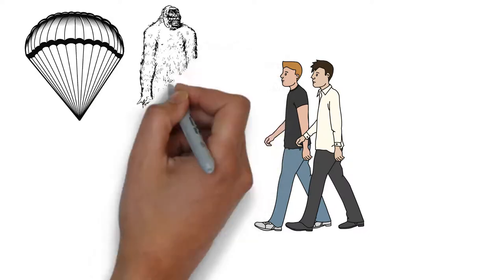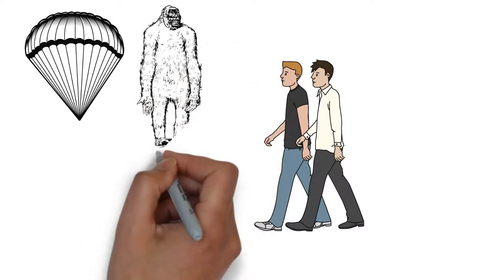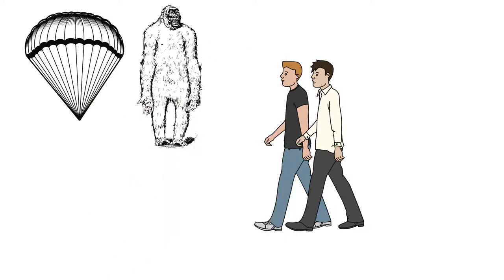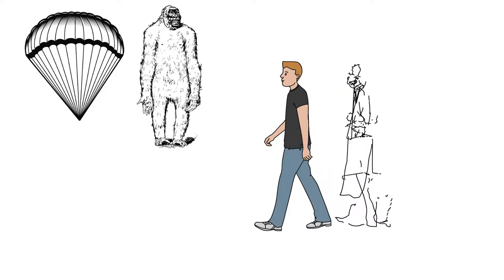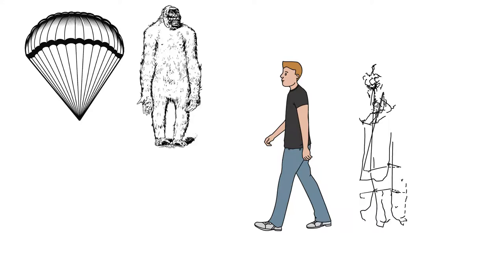Jack says that Ralph is a coward and shouldn't be their leader anymore, but the boys refuse to vote him out as leader. Jack runs away to the beach, calling on his hunting crew to join him.